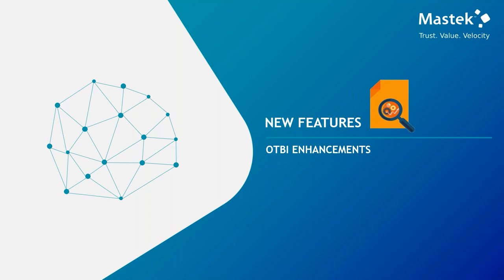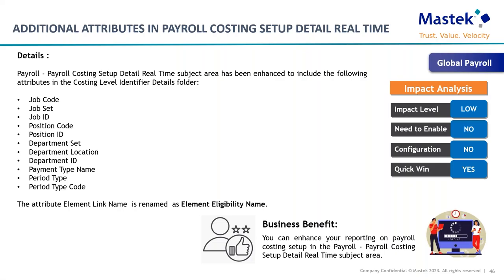Now moving to OTBI announcements. Oracle has enhanced several subject areas and added new fields available for use in current or new reports. In the global payroll space, new attributes are now available in the costing subject area and period costing subject area, including: job set, job code, job ID, position code, position ID, department ID, and period types. If you want to use position IDs, job IDs, department IDs, or any of these fields, they are now available in your subject area.